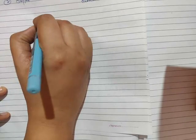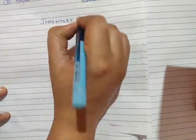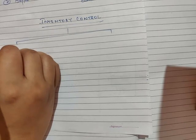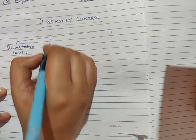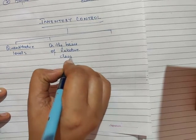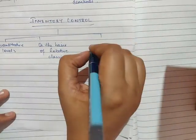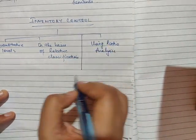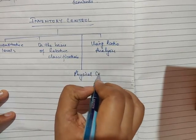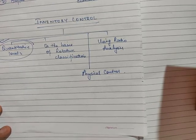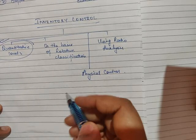Hello friends. In our last video we had seen that there are four ways of inventory control: by setting quantitative levels, on the basis of relative classification, using ratio analysis, and lastly physical control. In our last video we had covered inventory control by setting quantitative levels. Today we are going to look at inventory control by using ratio analysis.